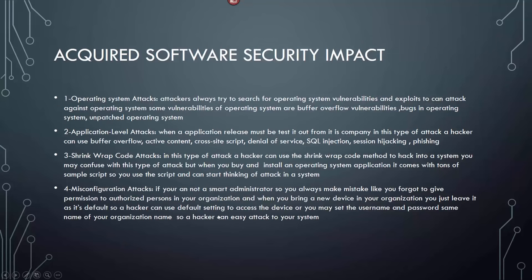Acquired software security impact: there are really four types of security impacts. Operation system attacks — basically attacking the operating system — go back to patch management. If you're doing patch management, your OS vulnerabilities and exploits are very low. Buffer overflow and bugs in operating systems are attacked on unpatched systems. Application-level attacks include cross-site scripting, buffer overflow, SQL injection, session hijacking, and phishing. Shrink wrap code attacks are usually disgruntled developers packaging their applications with bugs or backdoors. Misconfiguration attacks: if you forget to give permissions to an authorized user or don't audit them — audit permissions associated with your entire system on a routine basis, at minimum yearly.